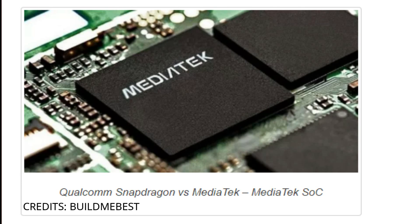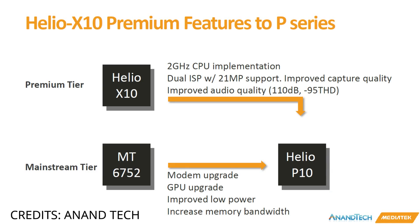Let's look at MediaTek. MediaTek is a Taiwan company. They have a chipset and a lot of mobile phones. They have a lot of chipsets in their lineup, including the P-Series and X-Series, such as the Helio P — MT-6757 or X-25 MT-6757.